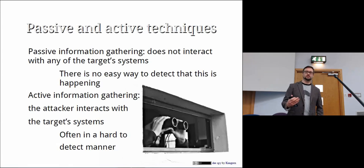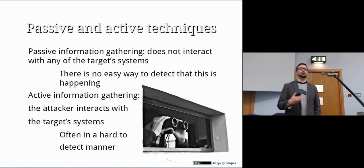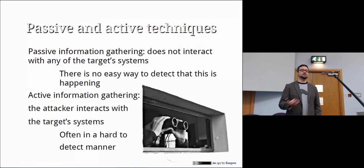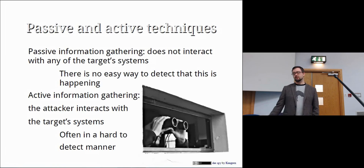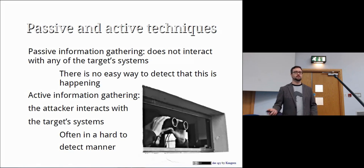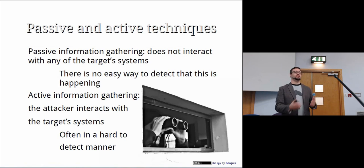There are two sides to this: passive and active techniques. Passive is basically when you don't directly interact with their systems at all, and in that case there's nothing they can do to even detect that anything is happening. For example, if you just go onto Google and search something, look at Google's cache — none of that will ever touch the server of the people you're attacking. The company themselves have absolutely no way of knowing you're even doing that.